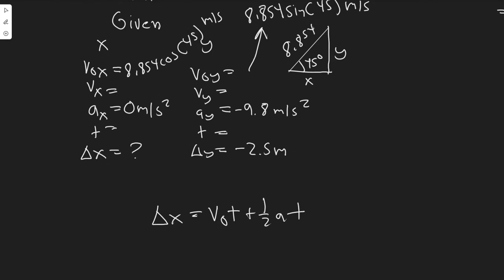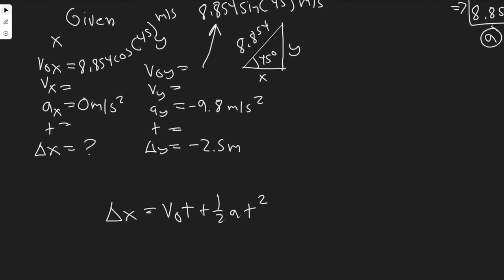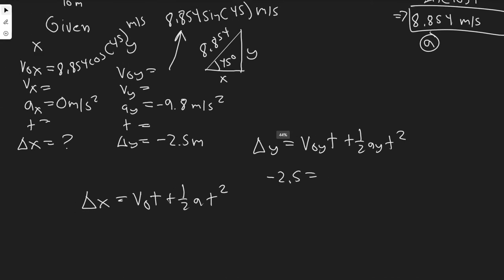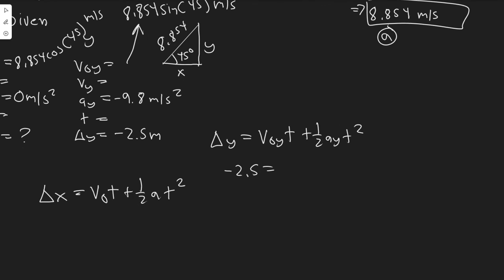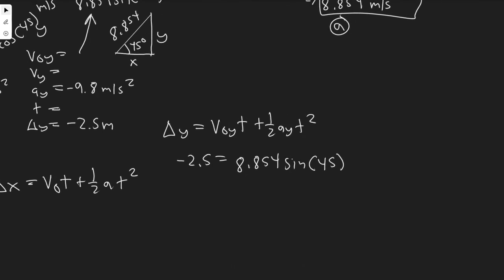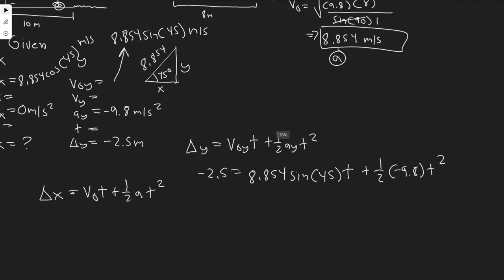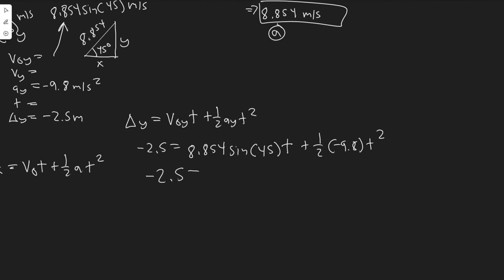Let's calculate t in the y. We're going to use the same formula, but in the y direction. We know that Δy equals V₀y times t plus ½ay t². We just got to plug in and solve for t to be able to solve for this one. So minus 2.5 equals 8.854 sine of 45 times t plus ½ times minus 9.8 times t². You should notice this is going to be a quadratic.